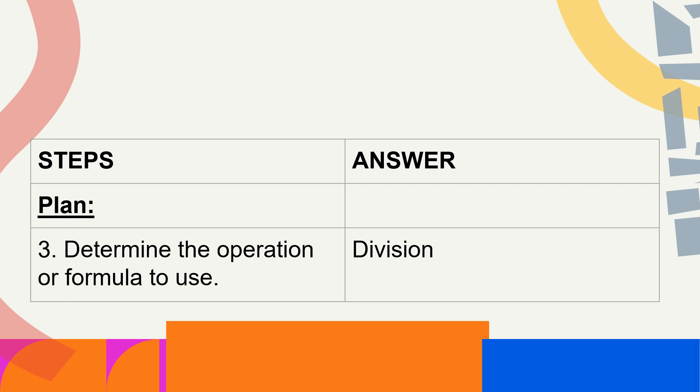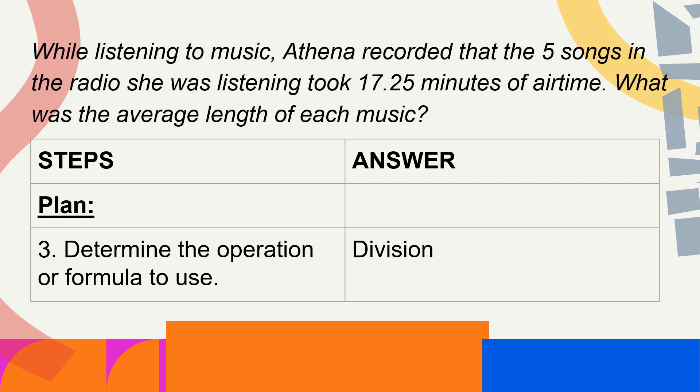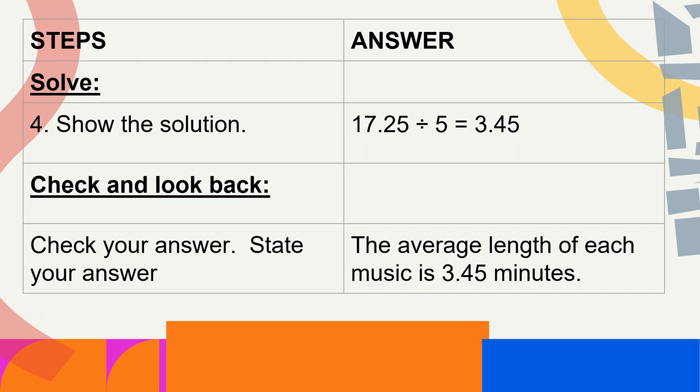Determine the operation or formula to use — the operation is division. The number sentence is 17.25 divided by 5. If we solve that, the answer is 3 and 45 hundredths. To check and look back, state your answer: the average length of each music is 3.45 minutes.